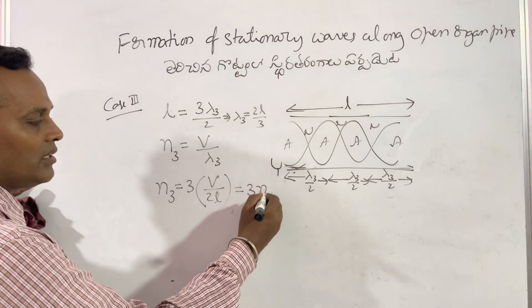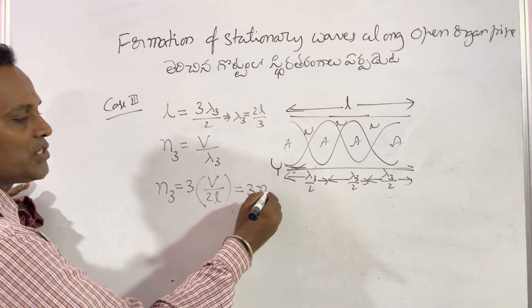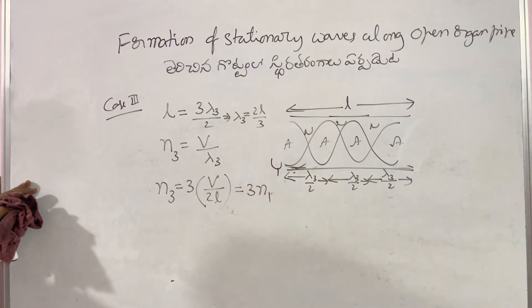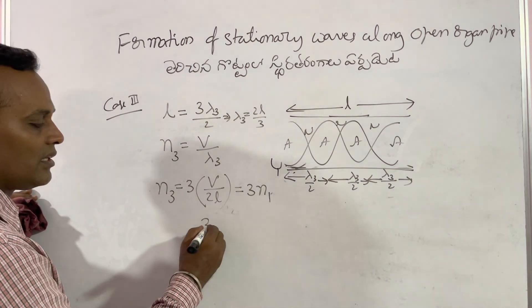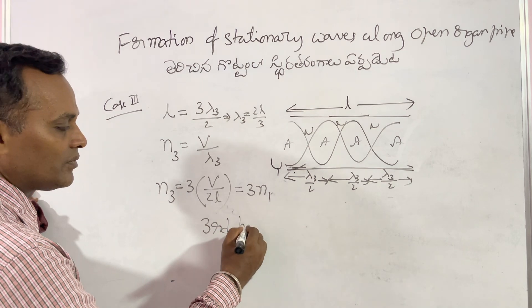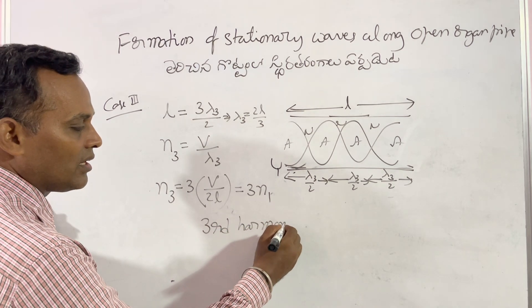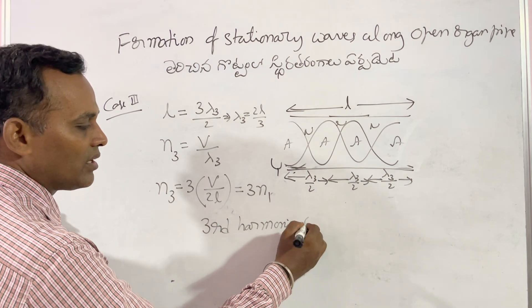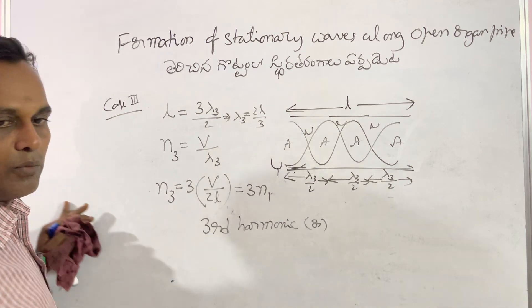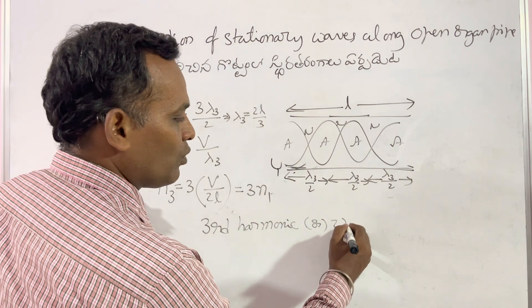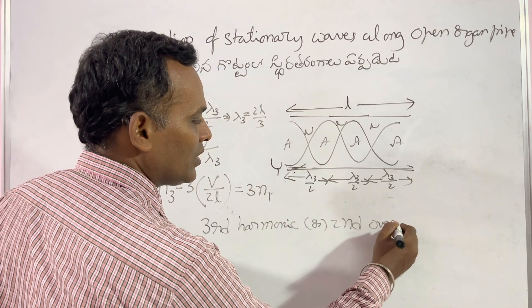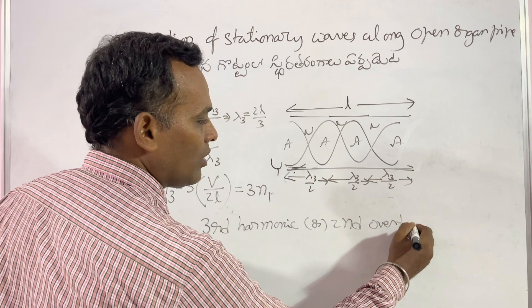So n3 = 3 × V/2L = 3n1. This is nothing but the third harmonic, or the second overtone.